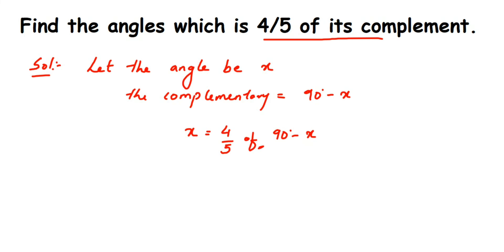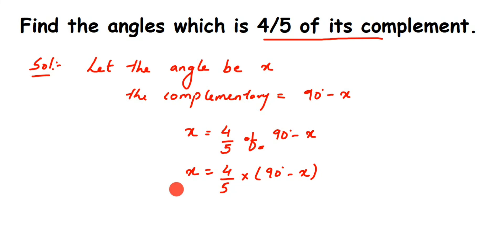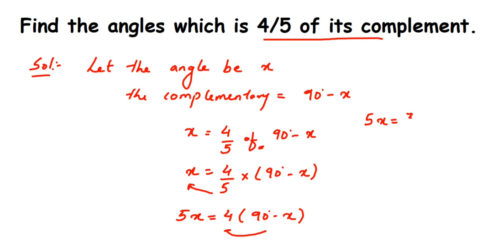'Of' means multiplication, so X equals 4/5 multiplied by (90 minus X). To solve this, instead of distributing 4/5 directly, I'll transpose the 5 to the other side — it moves from division to multiplication — giving 5X equals 4 times (90 minus X). Expanding the bracket: 5X equals 360 minus 4X.